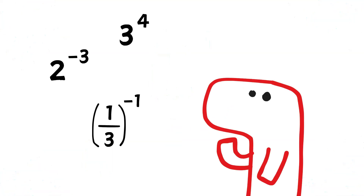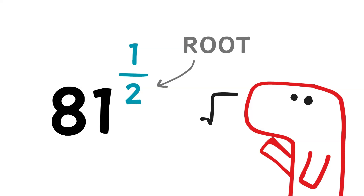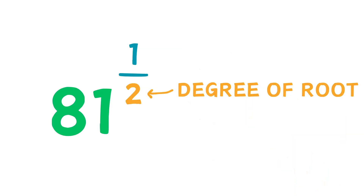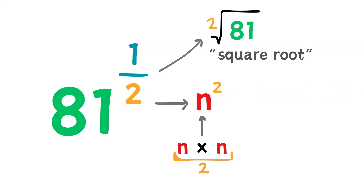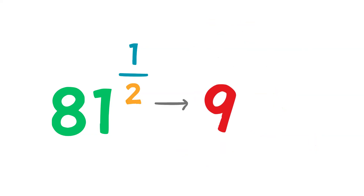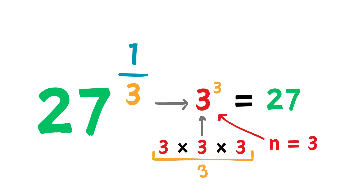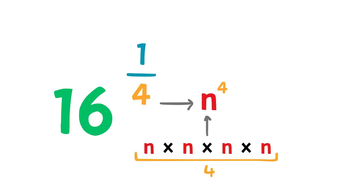All the exponents we've looked at so far were integers. How can we raise a number to a fraction? This is called the root. If we raise something to the power of 1 half, we are finding the square root — what number, when multiplied together twice, makes 81? The answer is 9. If the denominator is 3, we find what number multiplied by itself 3 times equals the base: 3 multiplied 3 times equals 27. What number multiplied 4 times equals 16? 2. So 16 to the power of 1 fourth is 2.